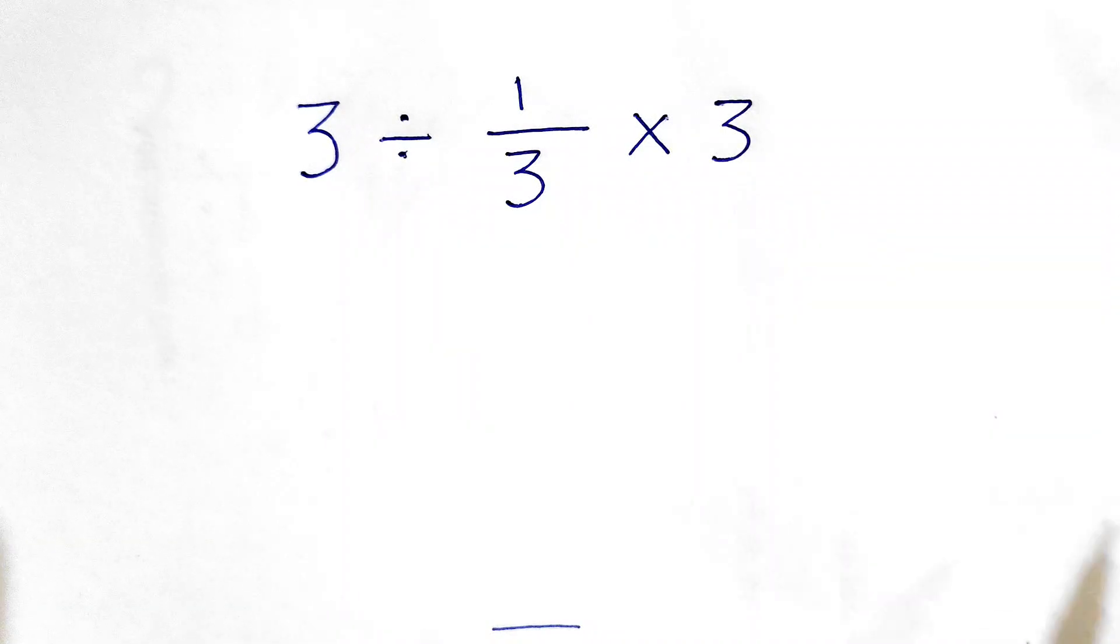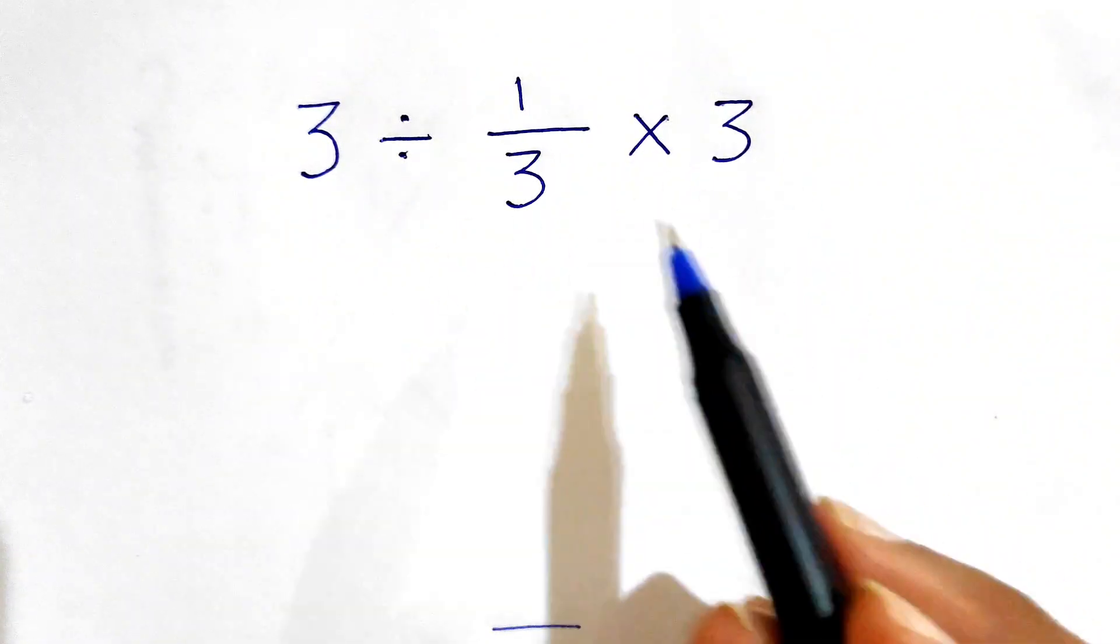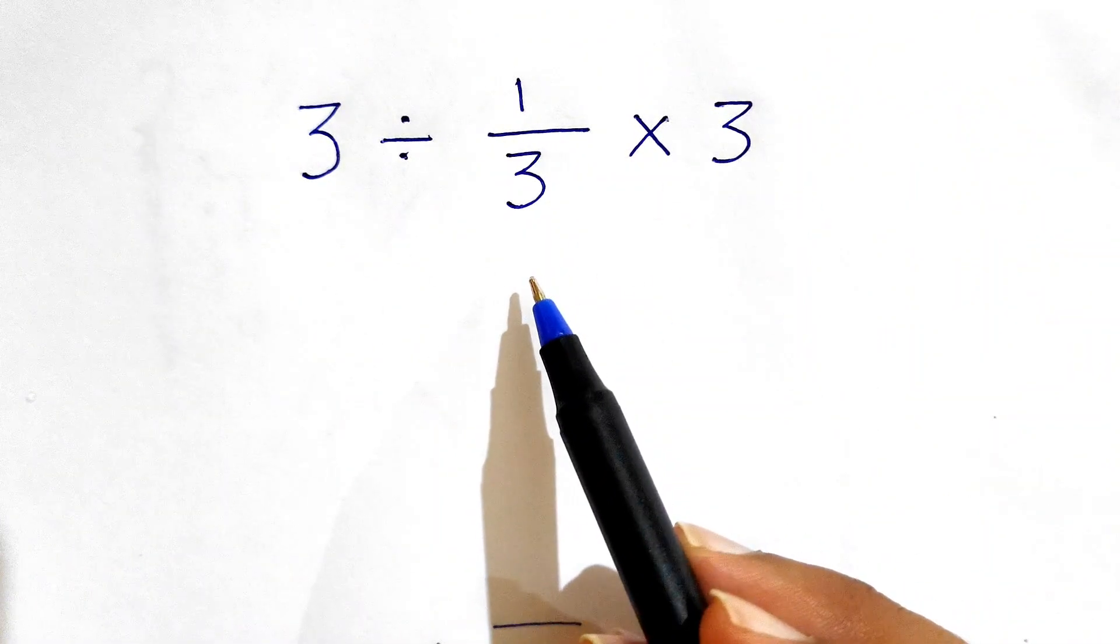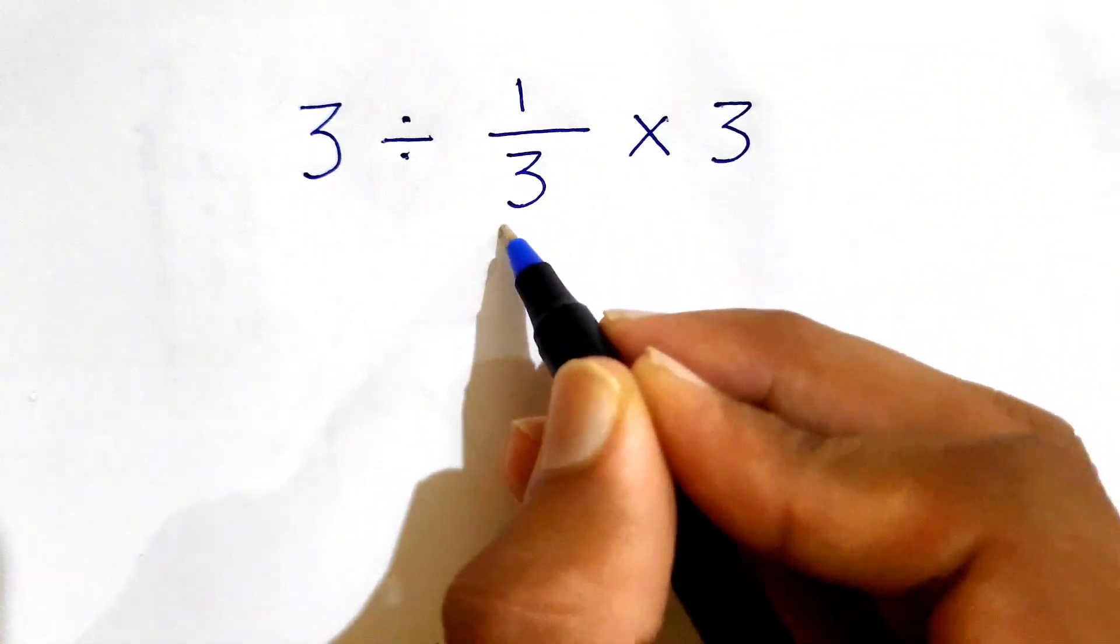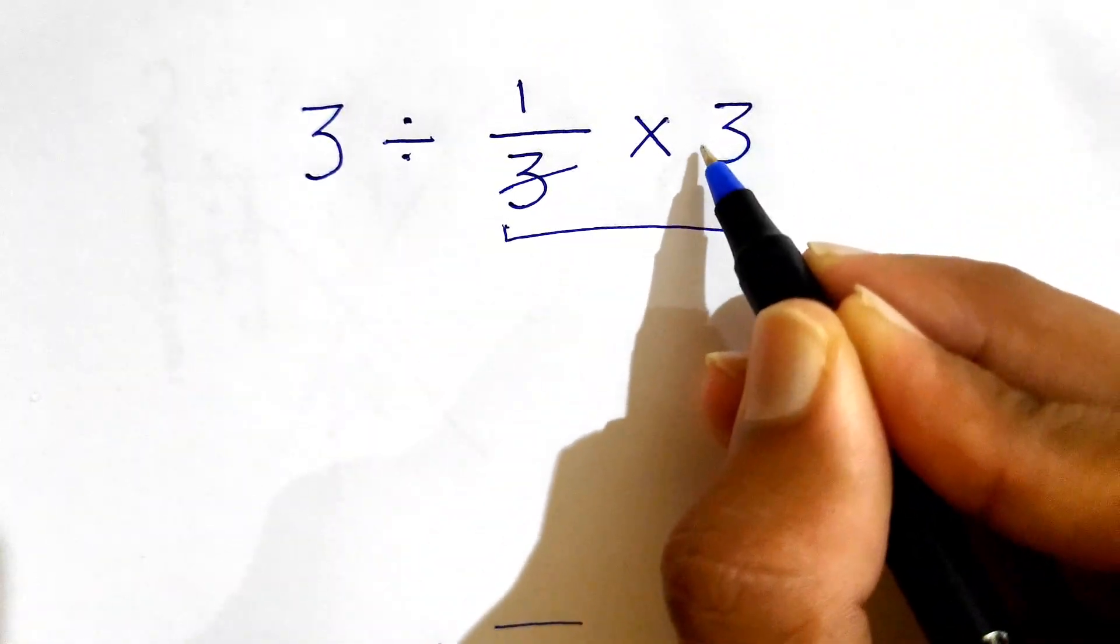Welcome back guys. So today we have the expression 3 divided by 1 over 3 times 3. Let's try solving this. Most people will solve by simply taking this first. They'll simply cut this 3 and this 3.